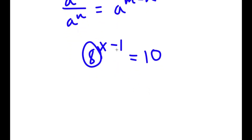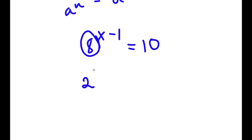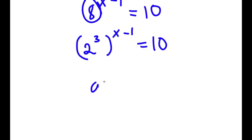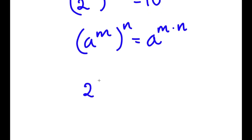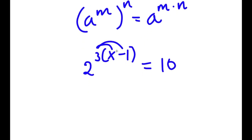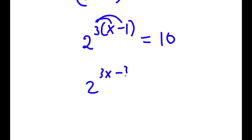Now 8 is the same thing as 2 to the power of 3. So I have 2 to the power of 3 to the power of (x minus 1) equals 10. Using the rule that a to the power of m to the power of n equals a to the power of m times n, that gives 2 to the power of 3 times (x minus 1) equals 10. Distributing the 3, I get 2 to the power of (3x minus 3) is equal to 10.